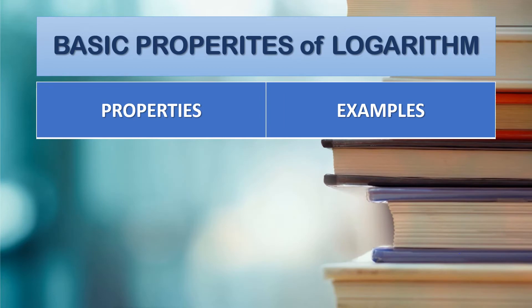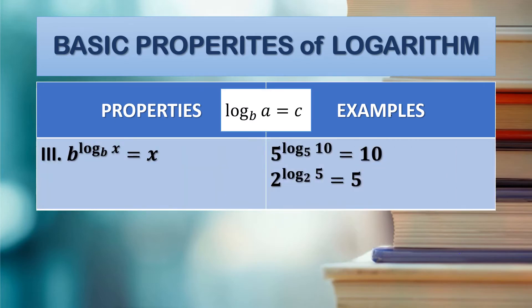Let's proceed with the next set of properties. Property 3: the given is an exponential form with the exponential expression in logarithmic form. The format is: b raised to the log of x with base b is equal to x. So for the exponential form in logarithmic expression, whatever the value of x, that will be the whole value of the expression. Example: 5 with exponent log of 10 with base 5 is equal to 10. The value of x is 10, therefore the whole exponential expression equals 10. Next example: 2 raised to the log of 5 with base 2 is equal to 5.